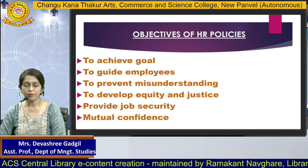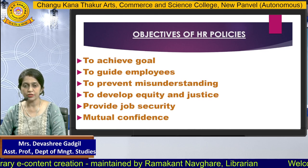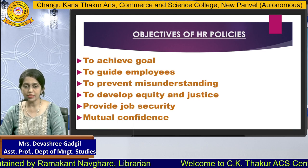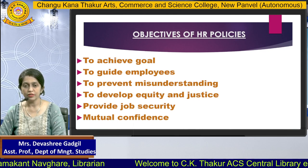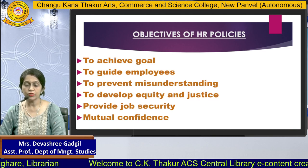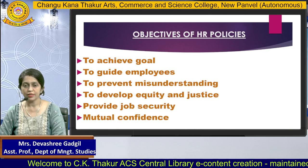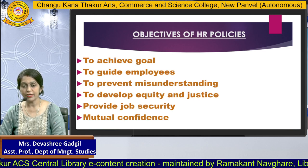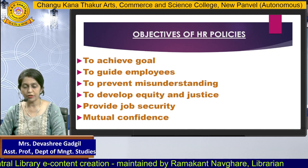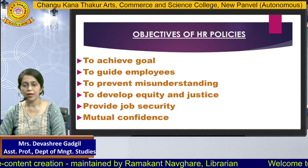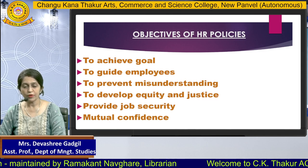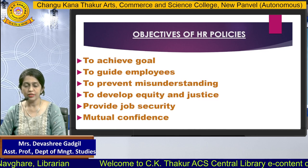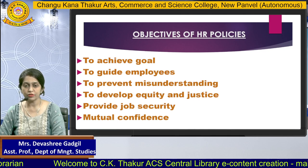The third objective is to prevent misunderstanding. Maintaining healthy employee-employer relationships is most important. Proper HR policies prevent misunderstandings related to any function in the organization. When properly formulated and implemented, they promote equity and justice, provide job security, increase employee satisfaction, and boost the confidence of employees.